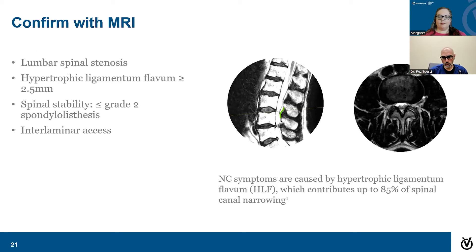We'll definitely need an MRI — we usually like them within a year. If you had your MRI outside of OrthoVirginia, we request that you bring the images so we can look at them together. We'll go through your MRI with you, discuss all what we see and all potential treatment options. If you do have narrowing of the spine, then we'll potentially discuss the MILD procedure as a treatment option.